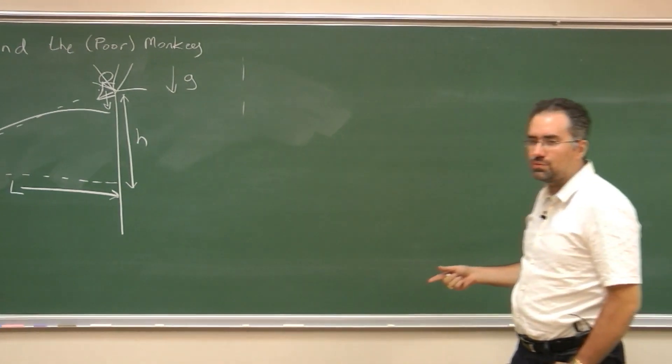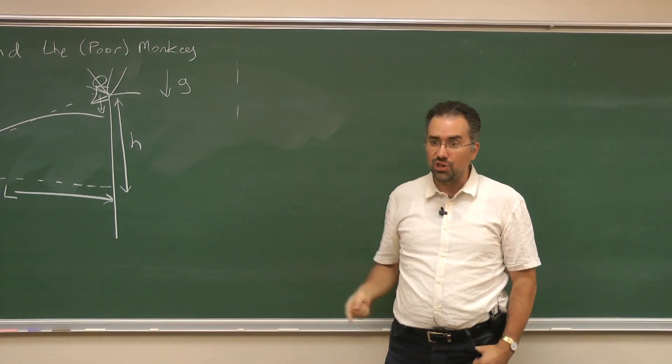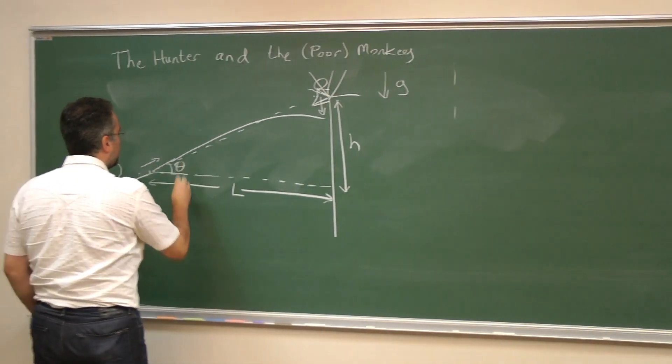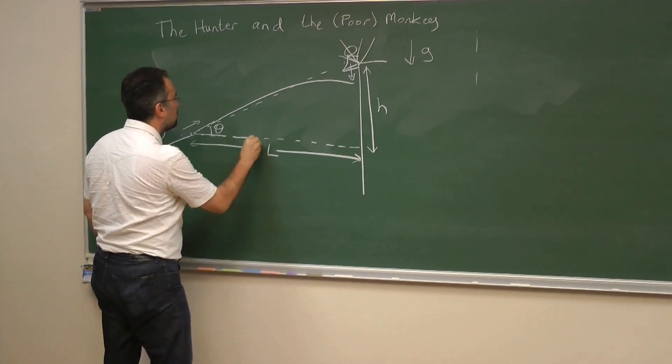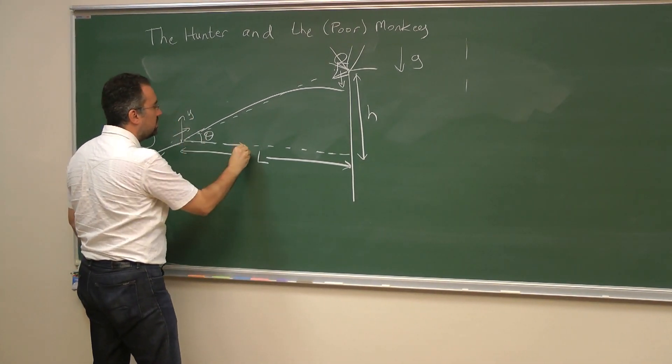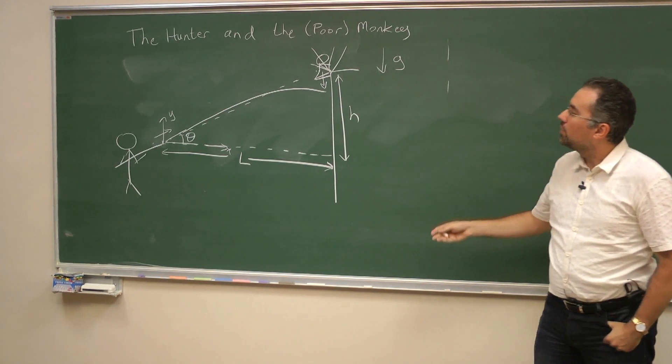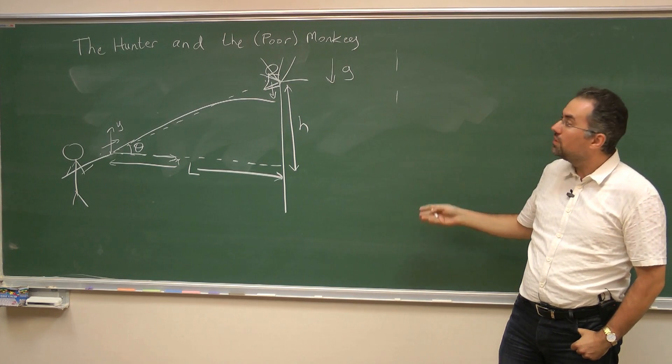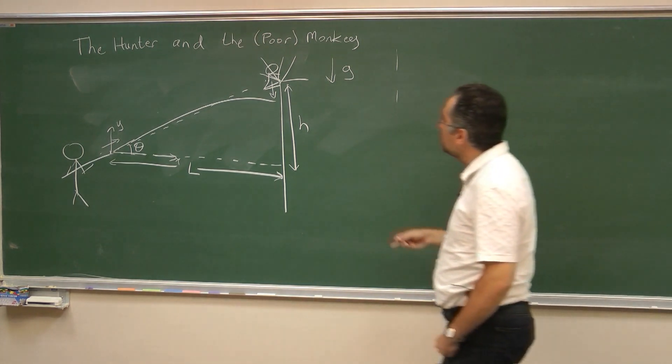Now since we are physicists we always neglect air drag. So essentially we assume that the velocity, the motion of the bullet in the x direction and the y direction are independent of each other. And the bullet in the x direction with whatever velocity it started it will perform uniform motion. And in the y direction it will accelerate downwards with the acceleration of gravity.